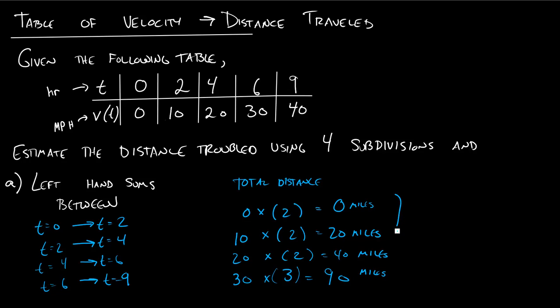If we want to get our total distance using the left hand sums, we'll just add up 0 plus 20 plus 40 plus 90 and we'll get 150 miles. A quick note on what this 4 subdivisions means: we're using 1, 2, 3, 4 subdivisions. And we'll need 5 points for that. Look at the points in the table they give us. They give us 5 points and that gives us 4 subdivisions.